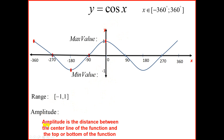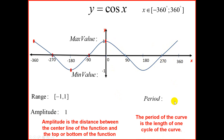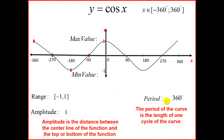Looking at the amplitude — remember the amplitude is the distance between the centre line of the function and the top or bottom of the function, and we always take the absolute value. The midline is the halfway line, and from the midline to the top is 1 unit, giving us an amplitude of 1. The period: starting at 1, going down and coming back up takes 360 degrees, so the period of this graph is 360. The period of the curve is the length of one complete cycle.